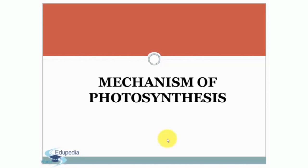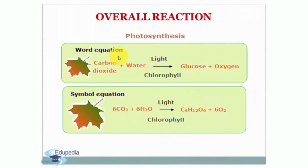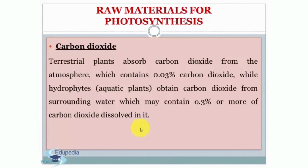Next we will discuss about the mechanism of photosynthesis. This is the overall reaction, which we also saw in the previous video lecture: carbon dioxide with water, in the presence of light and chlorophyll, is converted into glucose and oxygen. This is the symbolic equation, and in this video lecture I will deal with the raw materials for photosynthesis. The first raw material is carbon dioxide.